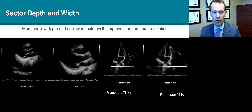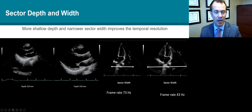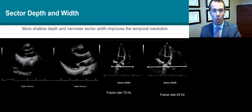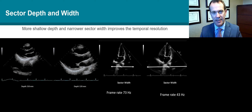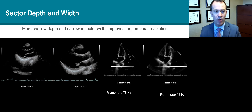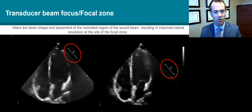The sector depth and sector width are important for temporal resolution. When we have a very deep image, it takes a lot of time for those scans to go all the way down to that deep anatomy and return to the probe, so the machine has to compensate by either reducing the frequency or reducing the number of scan lines. The same applies to sector width — the wider the sector, the lower the frame rate.